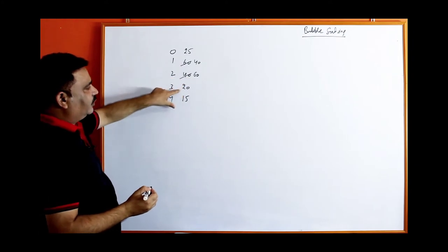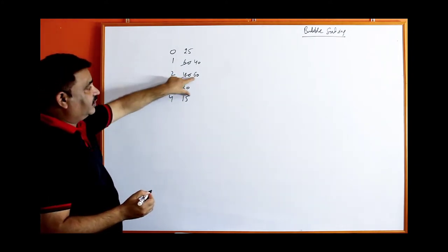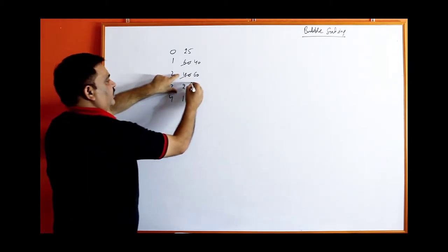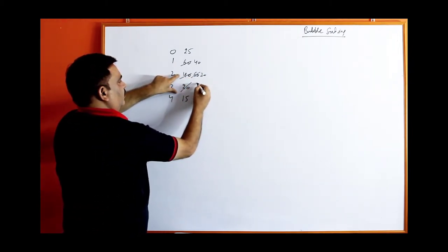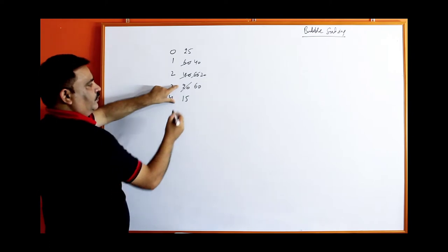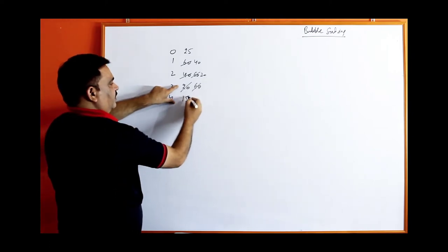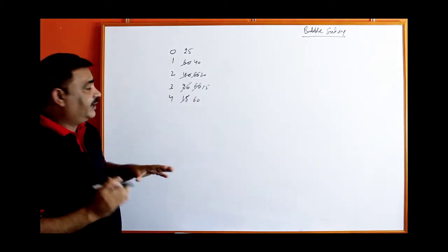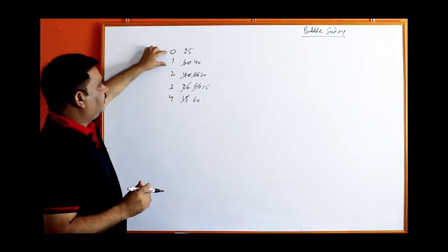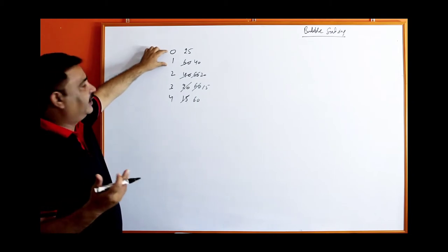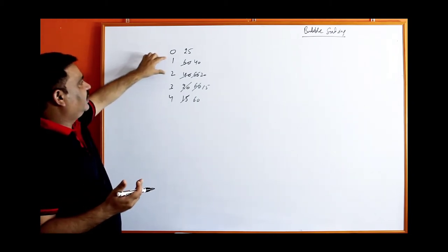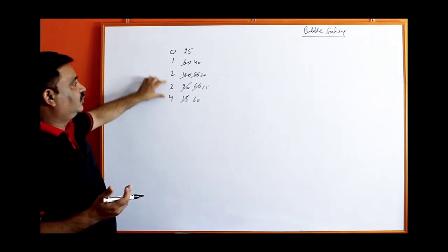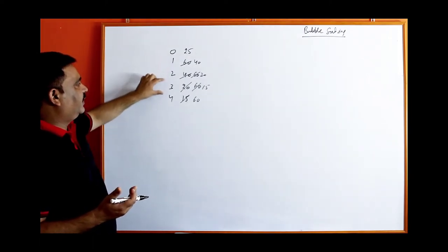Now compare 60 with 20 — 60 is greater than 20, so exchange again. Now compare 60 with 15 — 60 is greater than 15, so swap. So what we did here: we compared A[0] with A[1], A[1] with A[2], A[2] with A[3], A[3] with A[4]. So four comparisons we have done here.